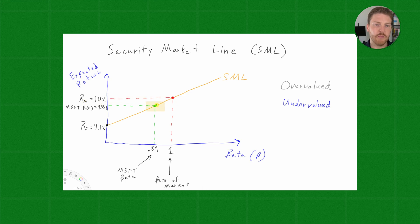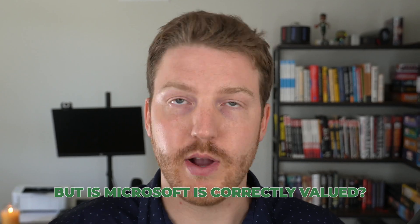Now, the other portfolio is Microsoft. So, if we own 100% Microsoft, then our portfolio has a beta of 0.89. And we expect the return, based on the calculations of CAPM, to give us a return of 9.35%.